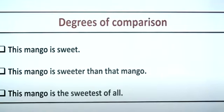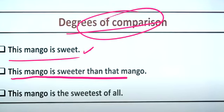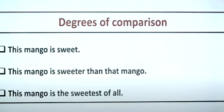Now let's look at degrees of comparison. For example: 'This mango is sweet,' 'this mango is sweeter than that mango,' and 'this mango is the sweetest.' These represent the three degrees of adjectives.